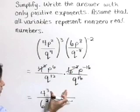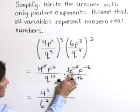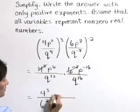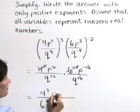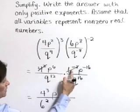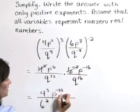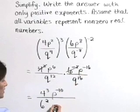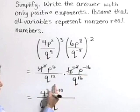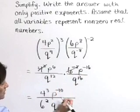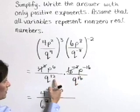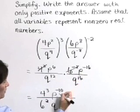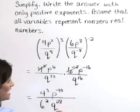Let's also use our product rule. As we multiply these like bases, add your exponents. So in the numerator, we'll have p to the sixth plus a negative 16 is a negative 10. In the denominator, q to the 12th times q to the 16th, adding exponents, that's q to the 28th.